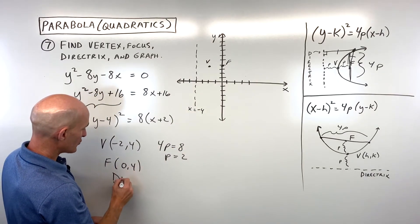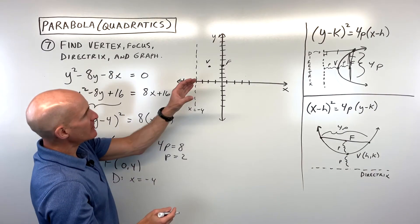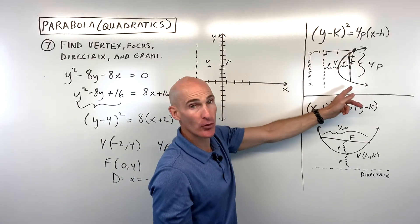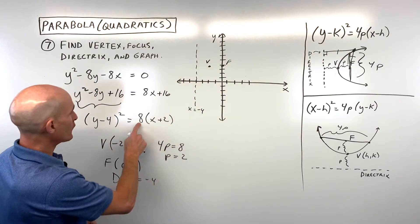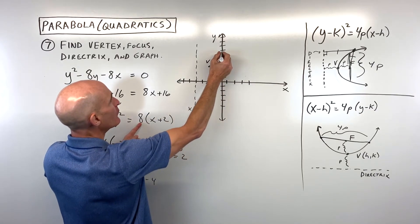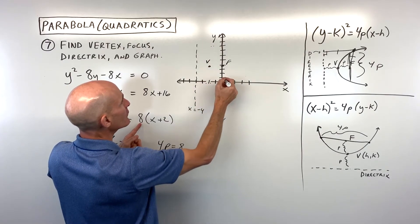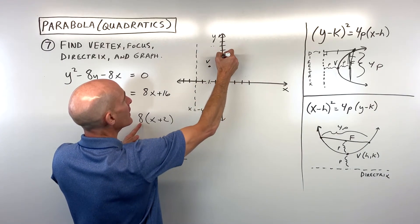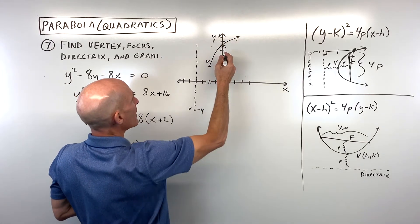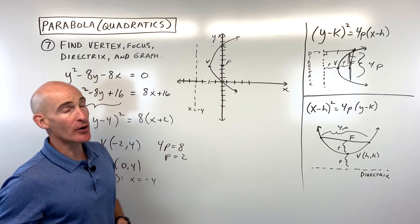At the level of the focus, the focal chord is 4p wide, which is 8. Half of 8 is 4, so going up 4 and down 4 from the focus gives us two key points. That tells us about how wide the parabola is at the level of the focus and gives us a pretty good sketch of our graph.